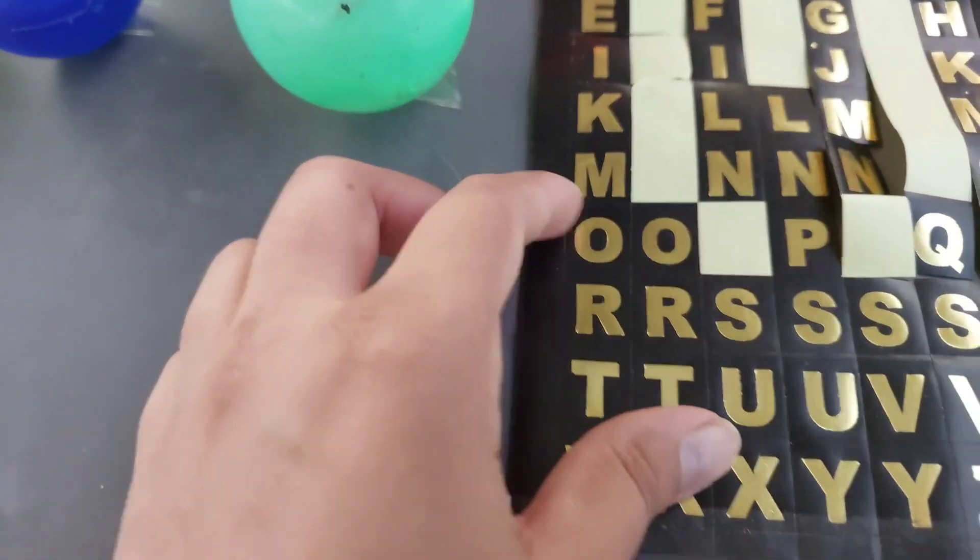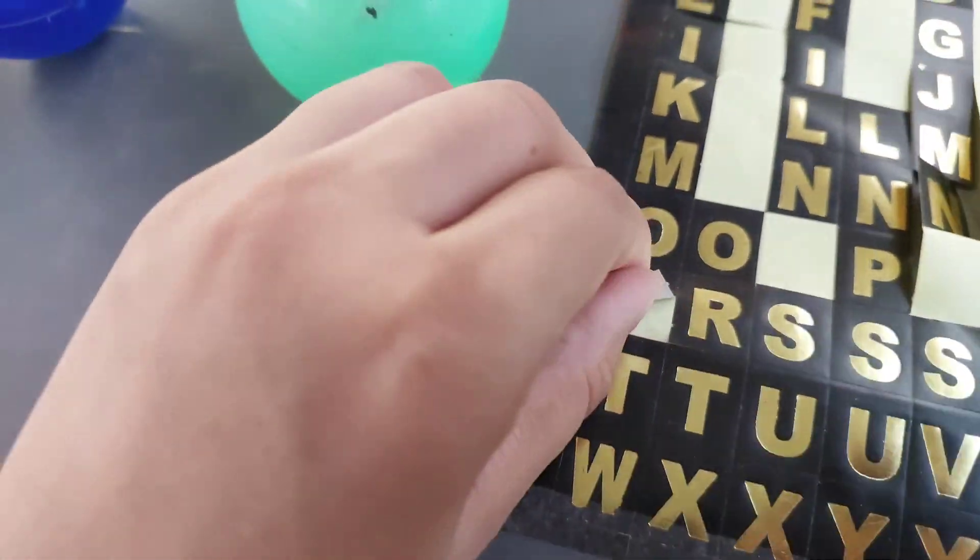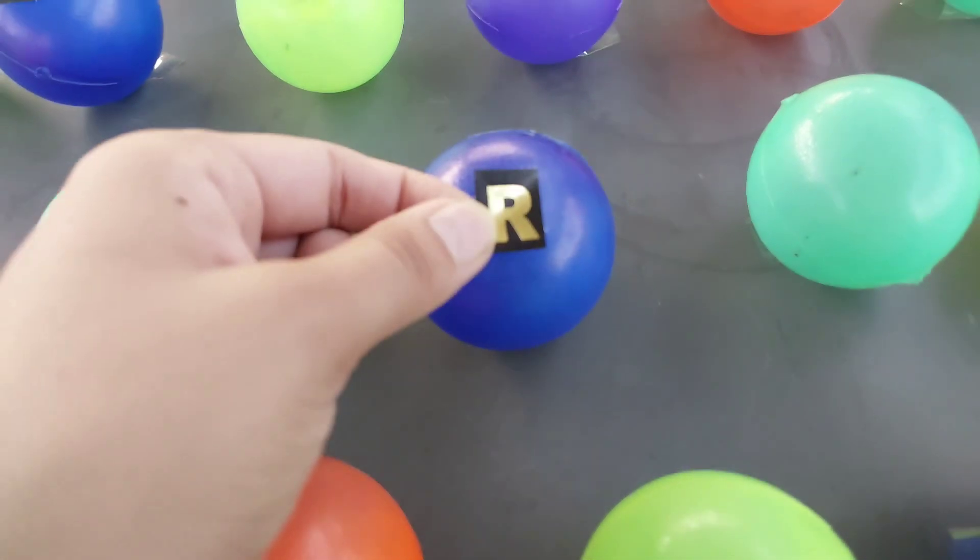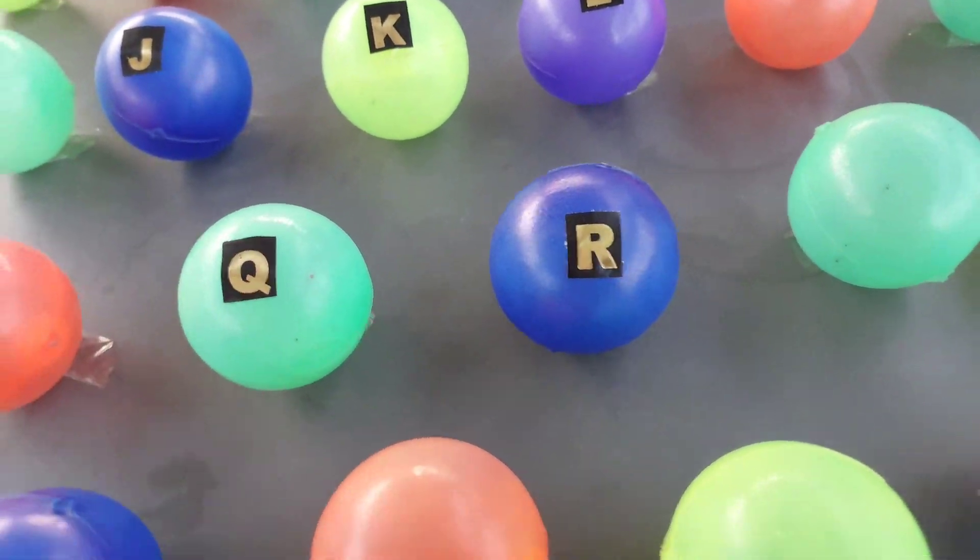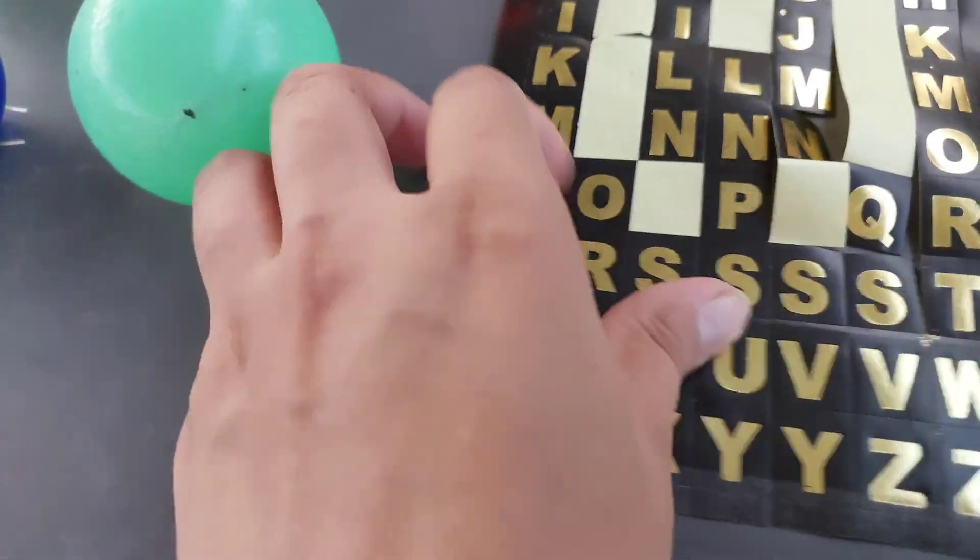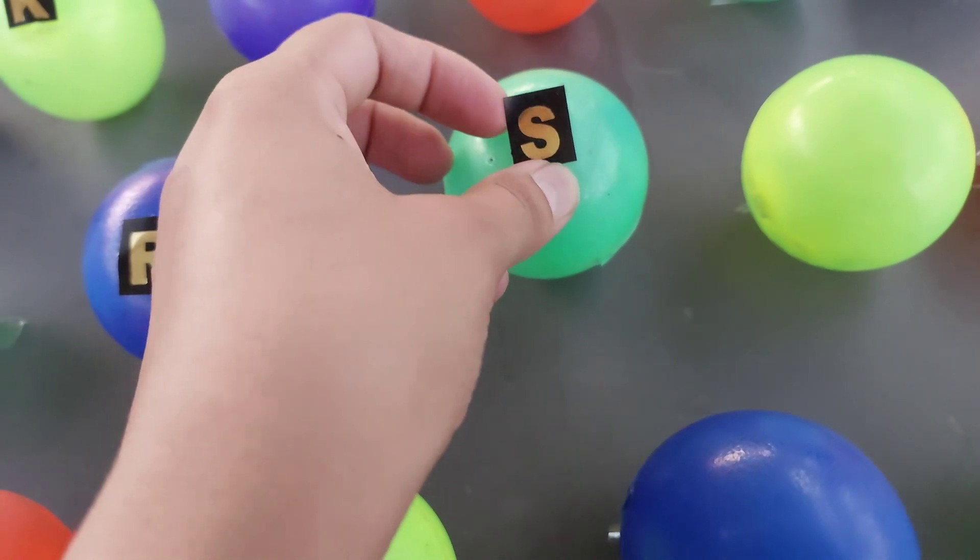Next letter R. R is for rabbit. The next letter is S. S is for snake.